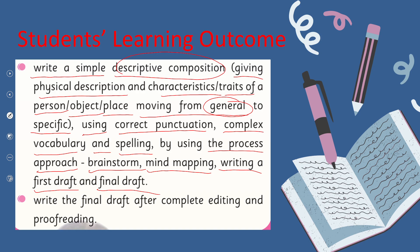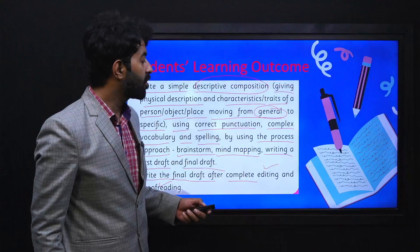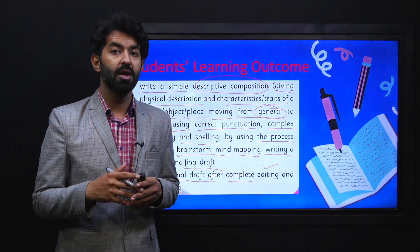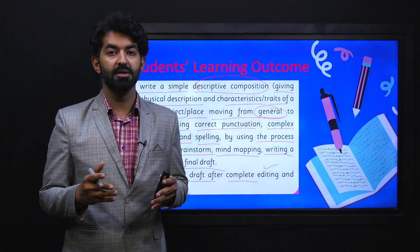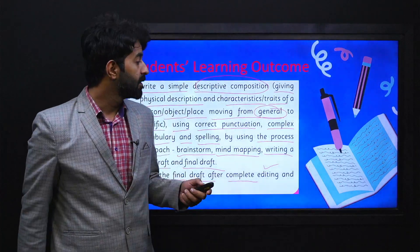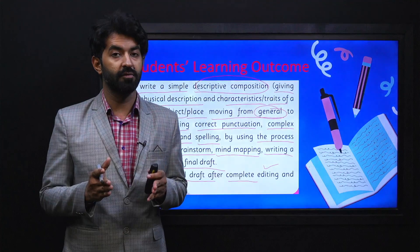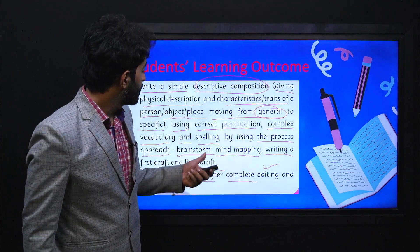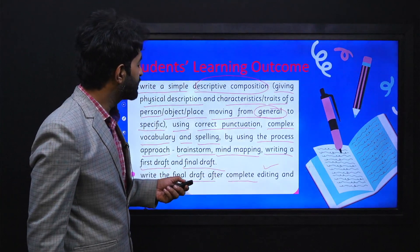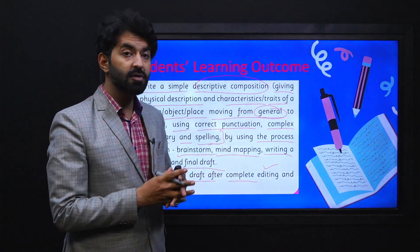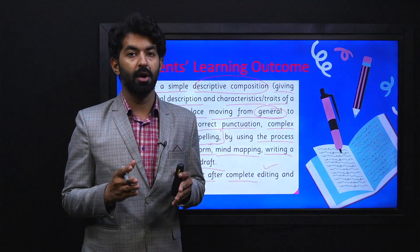The next SLO is again about writing the final draft after complete editing and proofreading. In today's video lesson we will be talking about descriptive composition — specifically giving descriptions of characters, places, or objects and their characteristic traits. We will also see the order of general to specific writing, and how to use punctuation, complex vocabulary, and spelling.